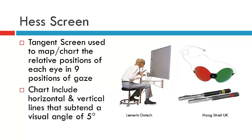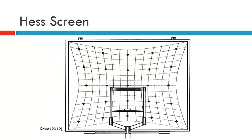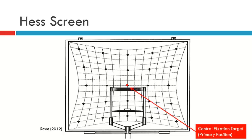More recent versions of the HES chart include LED lights — red lights — and the examiner is in control of the red light at all times. As we discuss the HES chart in this video, I will be assuming that the examiner is in control of the red light. This is what the patient sees: the tangent screen, with a series of horizontal and vertical lines and specific target points in circles and diamonds. The central dot is the central fixation target and represents primary position.